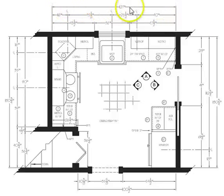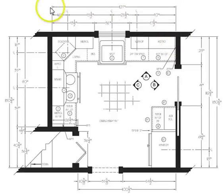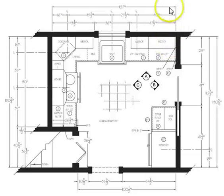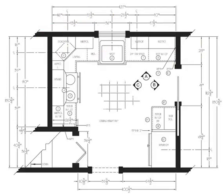Starting with the outermost dimension string, this dimension string is for the overall length of the wall. It goes from the inside face on one side all the way over to the inside face on the other side. That is the sole purpose for this outer dimension string. Also important to note: on kitchen and bath drawings we always use inches — we never use feet and inches, so all dimensions noted are always in inches.